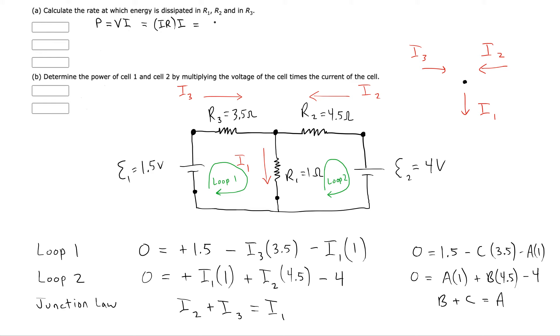And that would bring us to the new formula, I squared times R. That would be the easiest one to use since we have the currents.